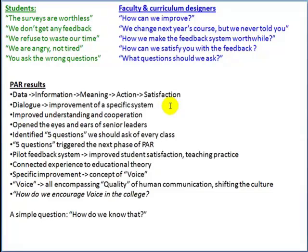Along the way, we identified five questions that students believe we should ask of every class. The five questions triggered the next phase of the participatory action research and produced a pilot feedback system, which led to improved student satisfaction and improved teaching practice. Along the way, we were able to connect our personal experiences to broad educational theory. Also coming out of this was the concept of voice — something like an all-encompassing quality of human communication — which shifted the culture inside the college: how we looked at each other, how we looked at the curriculum, and how we engaged in the classroom. It's leading me to ask, as my broad research question, how do we encourage voice in the college? And all of this was triggered from a simple question of how do we know that?